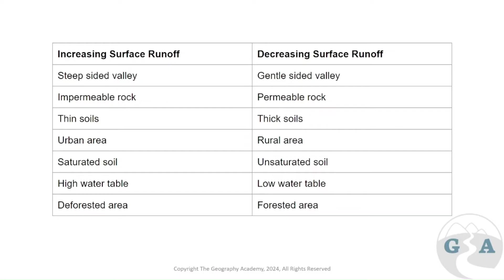Vegetation also provides intercepted storage and increases evapotranspiration, which leaves room for more water to infiltrate. Saturated soils, similar to thin soils, have nowhere for precipitation to go, so water moves to surface runoff very quickly. Unsaturated soils, on the other hand, have open pore spaces that allow water to flow through.